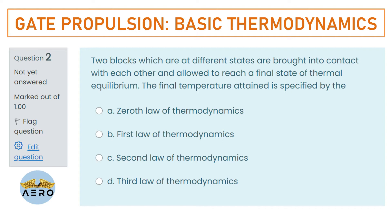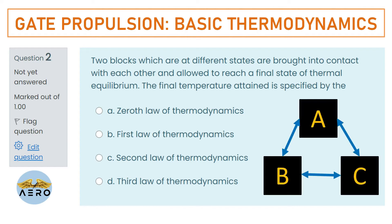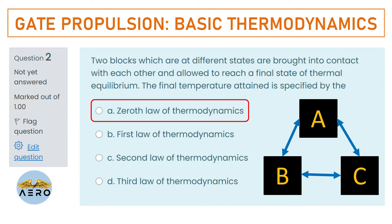Two blocks at different states are brought into contact with each other and allowed to reach a final state of thermal equilibrium. The final temperature attained is specified by the zeroth law of thermodynamics. The zeroth law states that if blocks A and B are in thermal contact, and body C comes in contact with either A or B, the final temperature of A, B, and C will be the same. That is the answer: A.